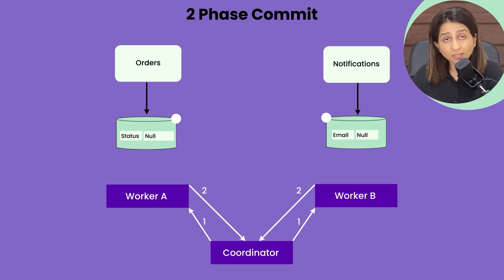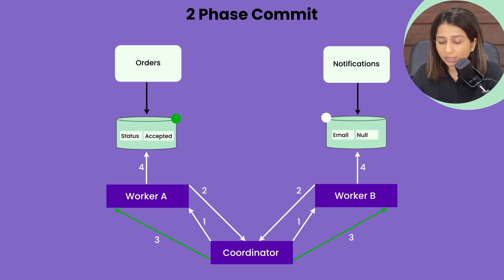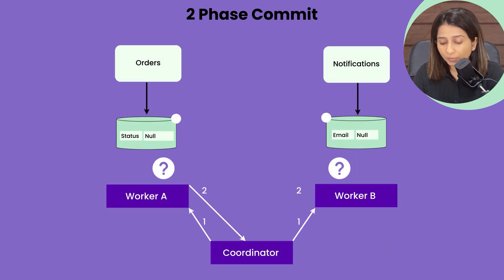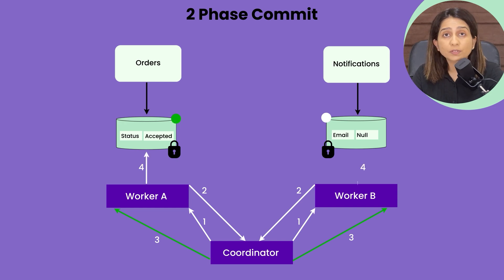In the third step, the actual commit happens. The coordinator says: change the order state to accepted and change the email state to sent. After the voting phase, both services put a lock on those particular rows, and those rows stay locked until the transaction completes on both services. Once the commit happens, both databases are updated and the whole transaction is complete. This is known as two-phase commit transactions.